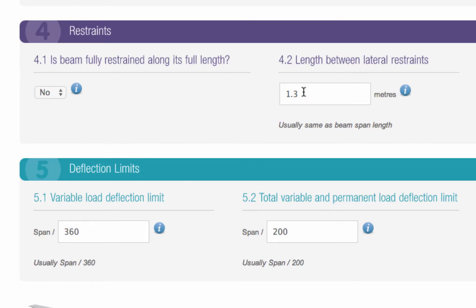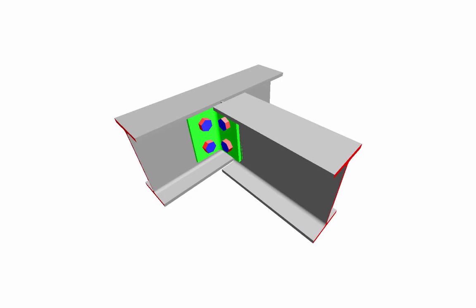If your beam isn't going to be fully restrained, you'll need to know the length between its lateral restraints. This is usually the same as the beam span length. However, if another beam is fixed at right angles to the beam along its length, this will provide lateral restraint. In this case, you should measure the greatest distance between lateral restraints and enter these details.